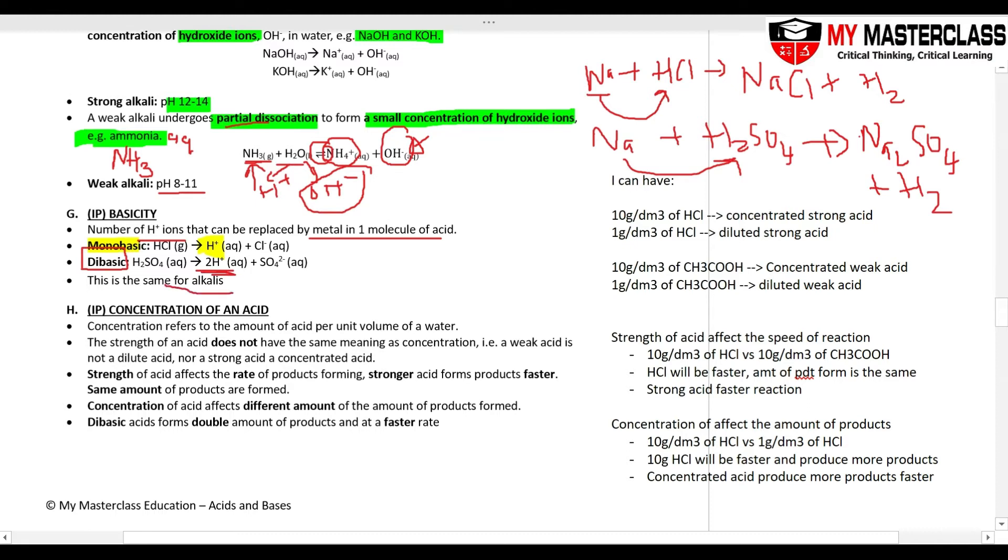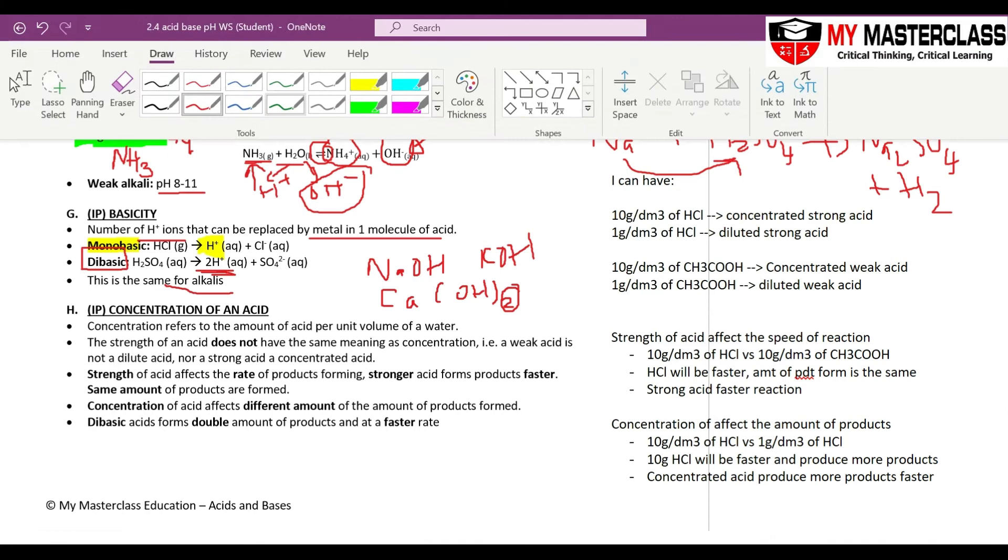So basicity will apply the same for alkali. We can have monobasic alkali, NaOH, KOH, one OH only. We can also have dibasic alkali, for example, your calcium hydroxide. There is two OH that's been kicked out.